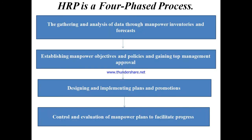Now let us discuss the human resource planning process. This process of HRP includes four steps. The first step is gathering and analyzing data related to the manpower inventory and forecast — how many people are available and how many are required.